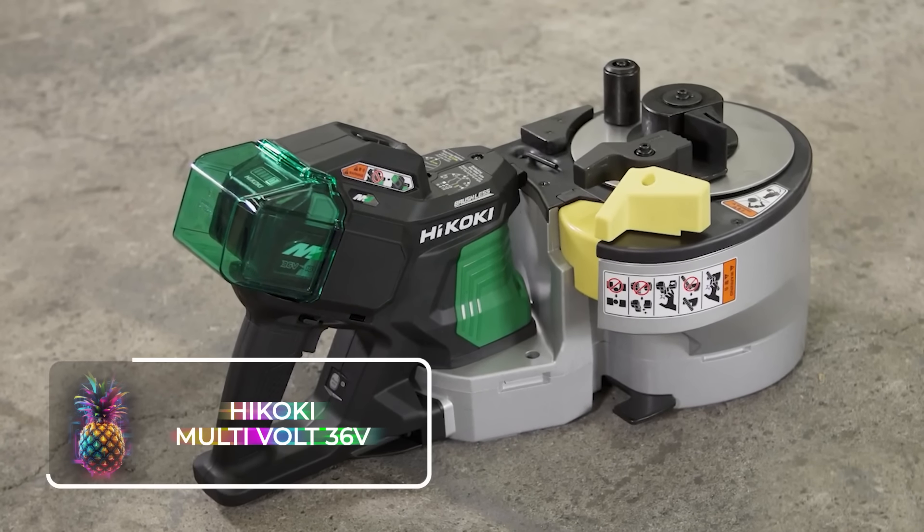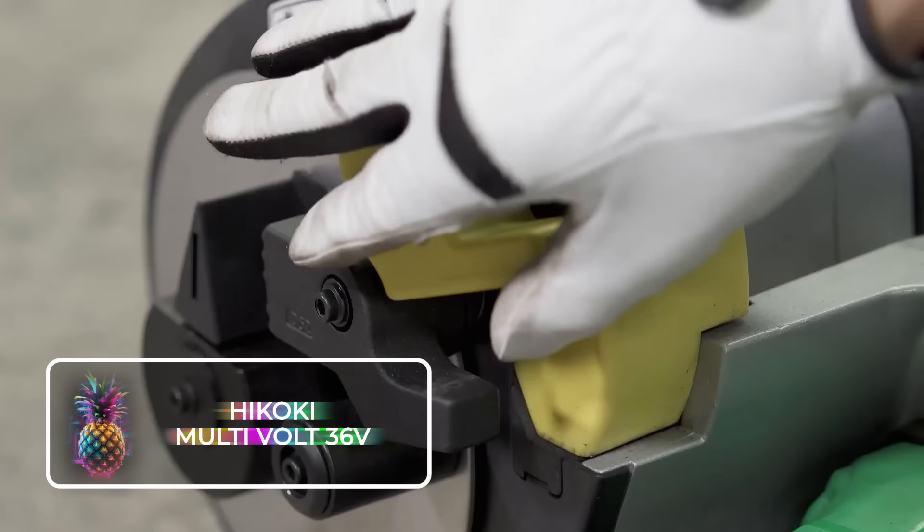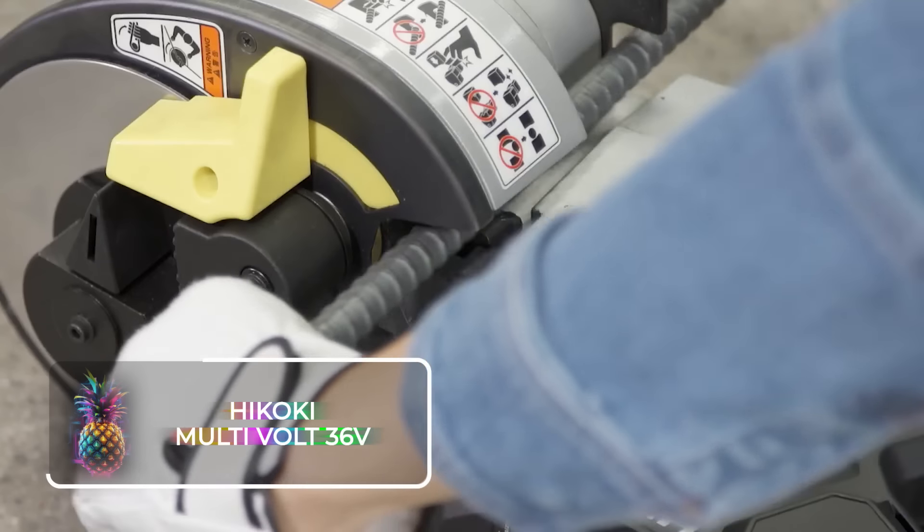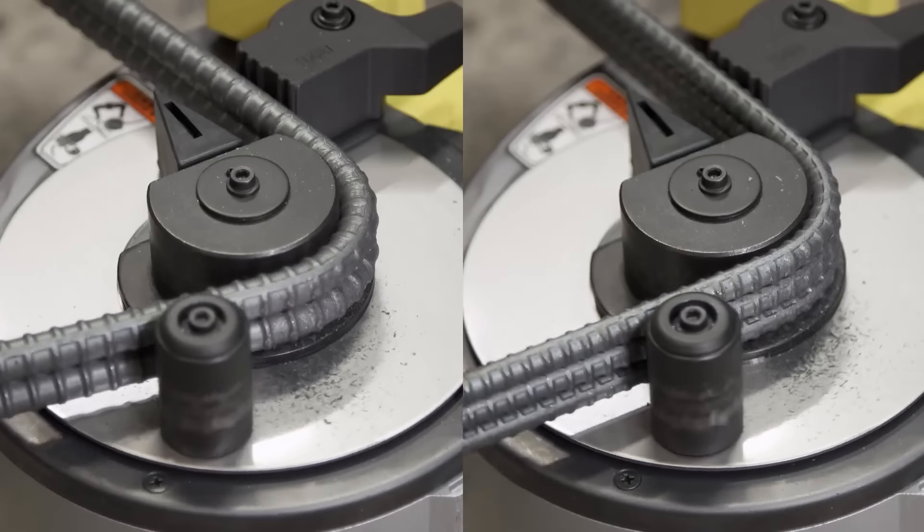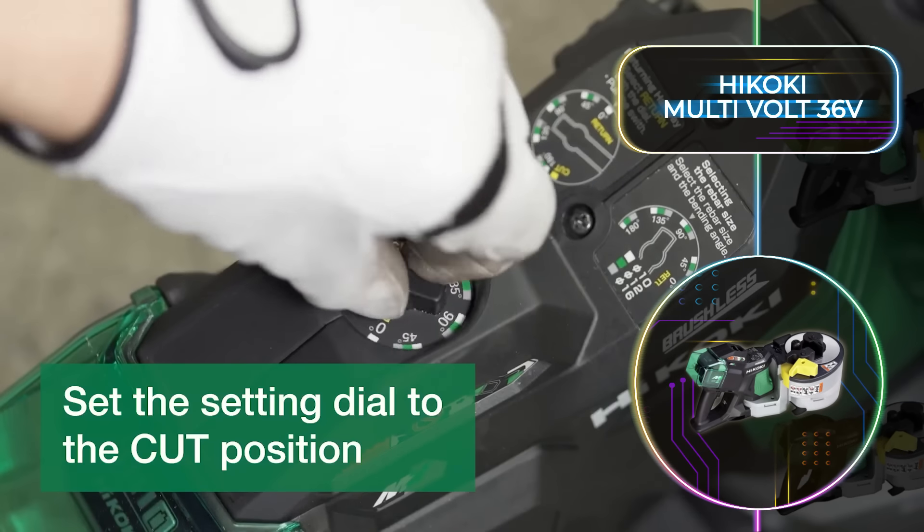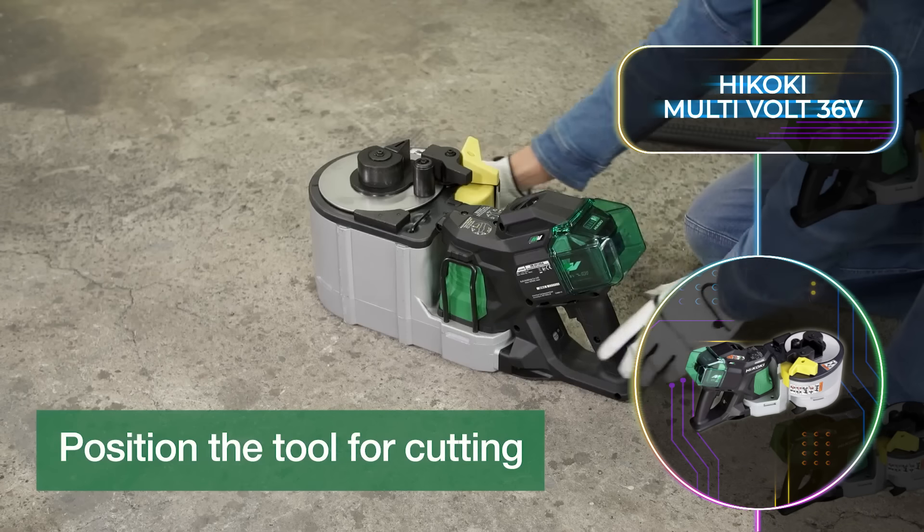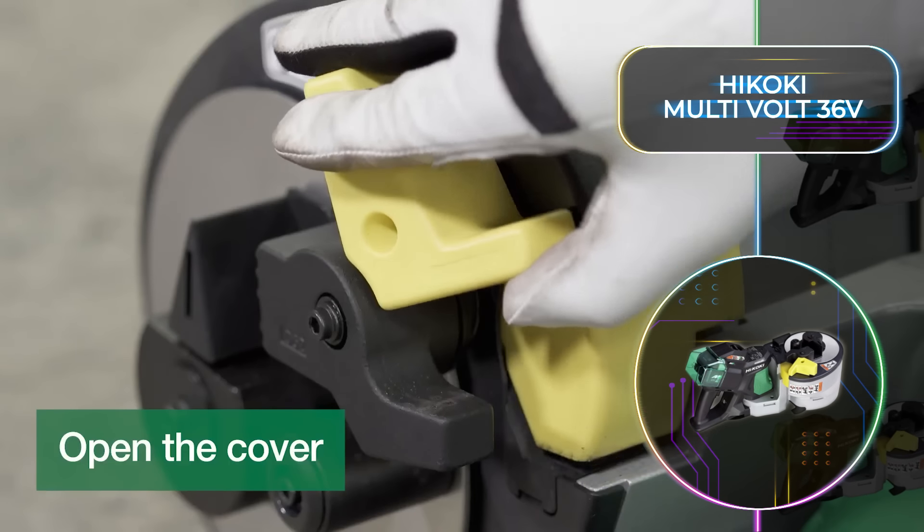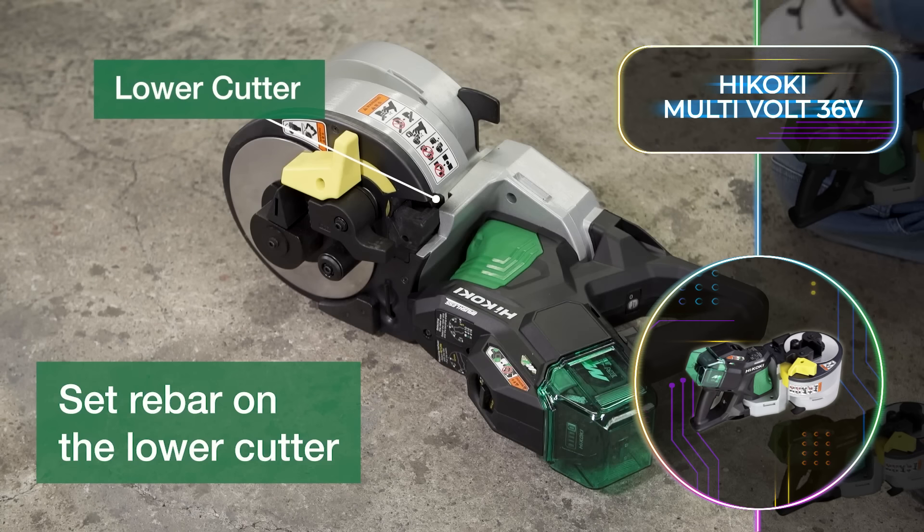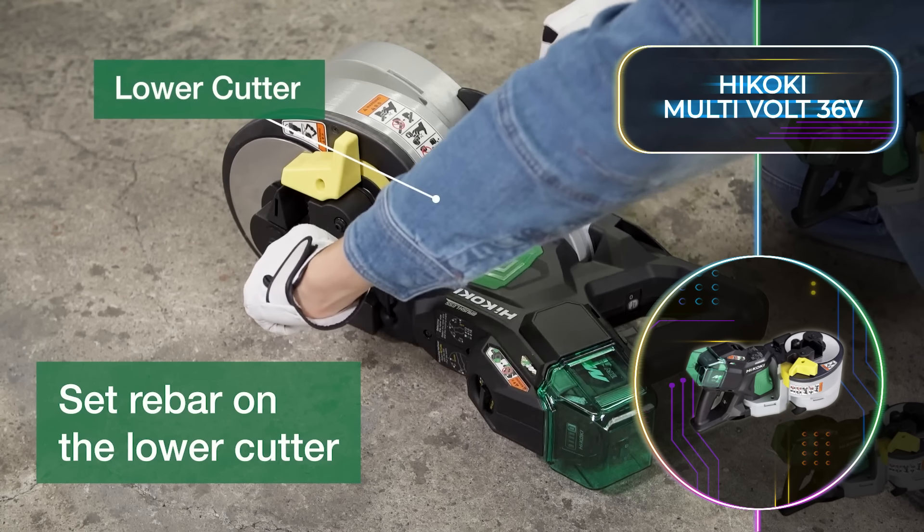Hikaki Multivolt 36V. Imagine a world where cutting and bending rebar is no longer a hassle and where you don't even need a power extension to be able to do this task. Allow us to introduce the first battery-powered rebar cutter and bender specifically designed to tackle the challenges of working with rebar. This tool will give you the same performance as its corded counterparts, plus it comes with two batteries, a charger, and a durable case.